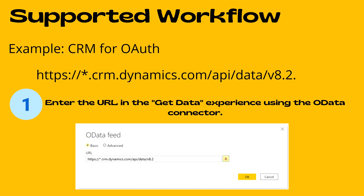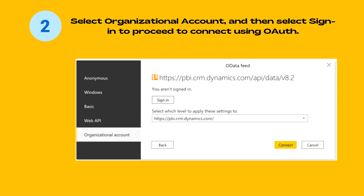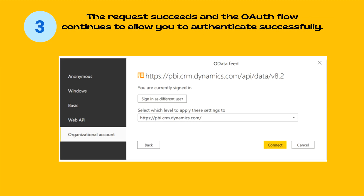Supported workflow comes into the picture when connecting with services like CRM. One example of a supported service working properly with organizational authentication or OAuth is CRM. To connect, first enter your CRM URL into the OData feed connector. Then use the Organizational Account option, which is OAuth, and click Sign In. You can also select the subfolder or main folder level to apply the settings. After signing in and saving your credentials, the request succeeds, the authentication flow continues, and you are able to connect with your CRM system.